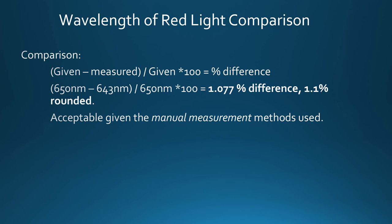So the given, which is in the manual for the laser, is 650 nanometers. Our measured one was 643 nanometers. And then we're going to divide that by the given and multiply it by 100 to get a percent difference, and we come up with 1.1 percent rounded difference. That's really close. That's very acceptable given the manual measurement methods used.